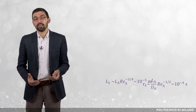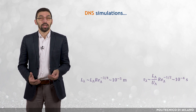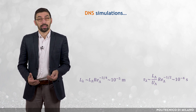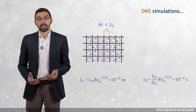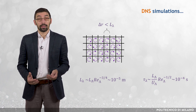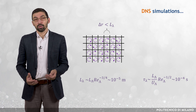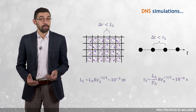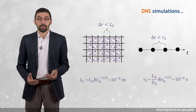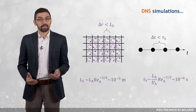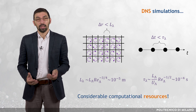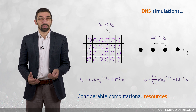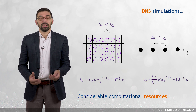If I wish to simulate this flow via the DNS approach, I have to reproduce even the smallest turbulent structures. As a consequence, the characteristic size of the computational cells, Δx, must be smaller than L_λ, and the time step for time integration, Δt, must be smaller than τ_λ. It is evident that such levels of discretization require considerable computational resources, explaining why the use of DNS is limited to academic research.